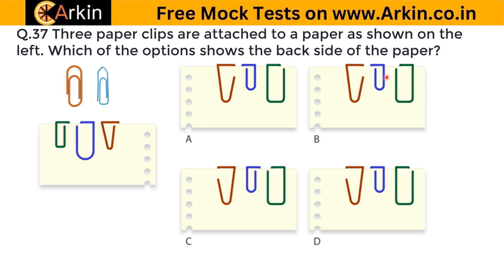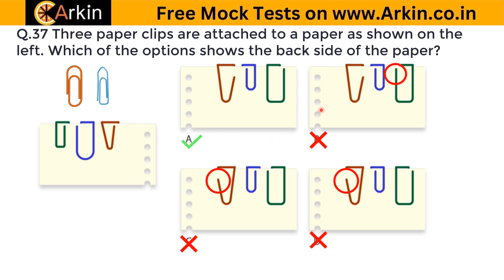Checking each option one by one: here it is on the opposite side — that's correct. Here also opposite side — correct. But in some options both ends are towards the hole, which is not possible, so those are wrong. Between A and B, checking the green clip: this end is towards the hole so the other end should be away from the hole. In B, the open end is towards the hole — so B will be wrong and A will be correct. The correct answer for this question is A.